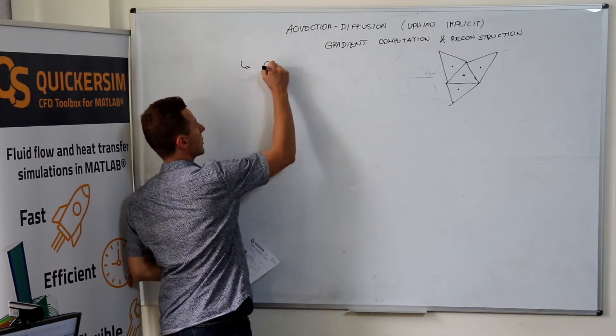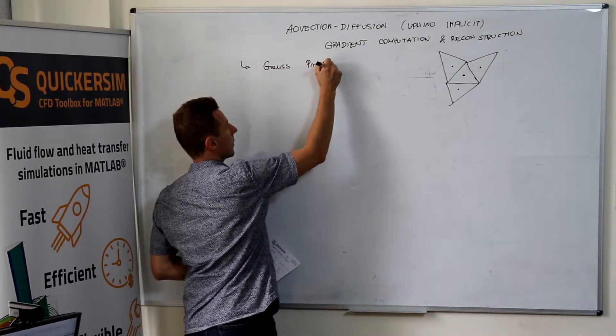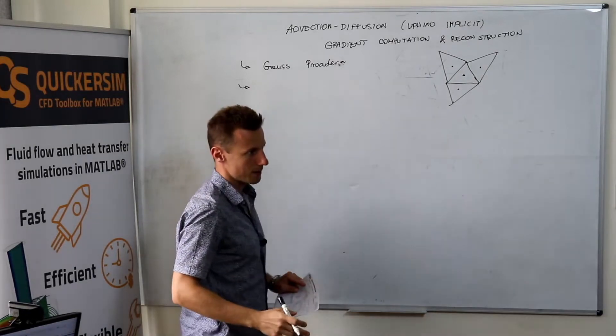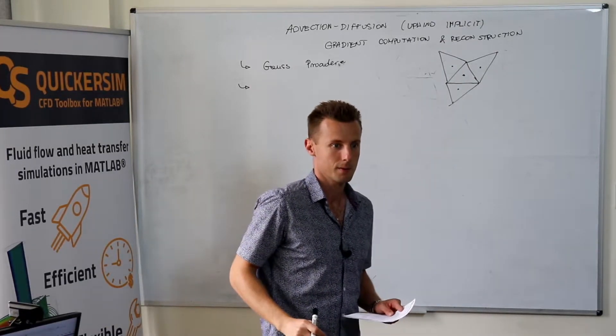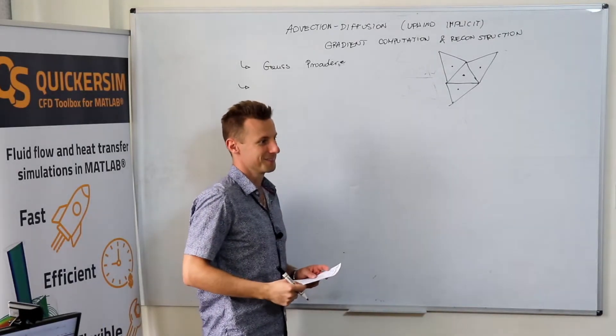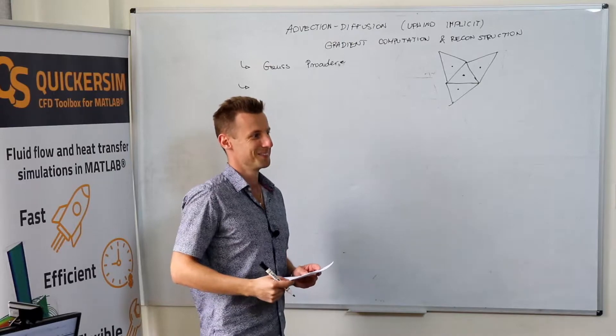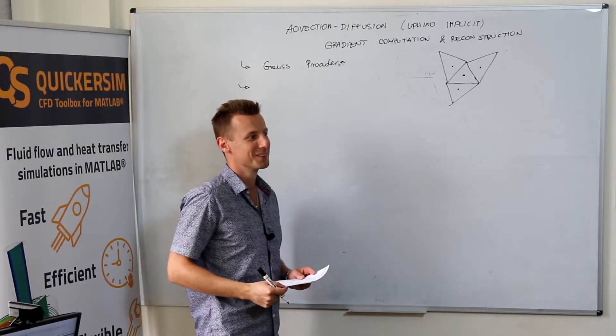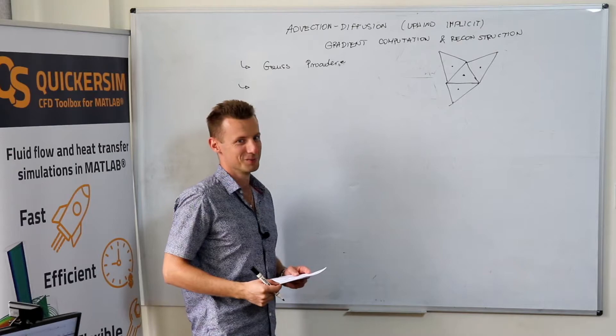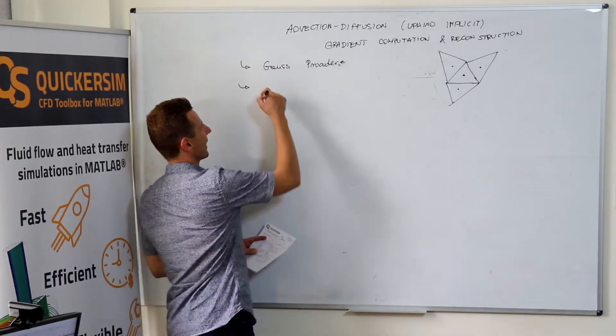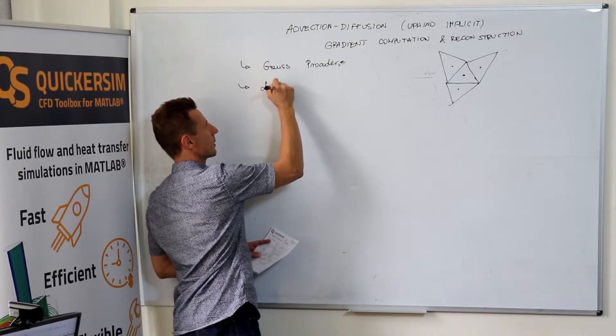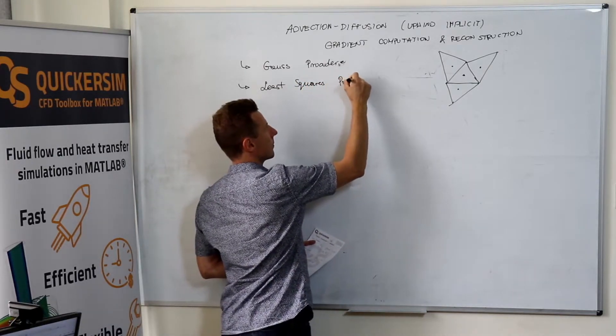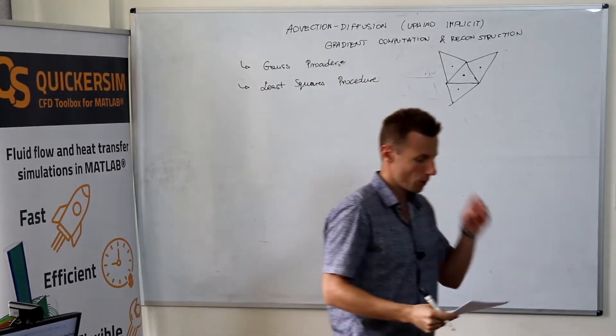And there are two ways in finite volumes, or probably more ways to do that, but two popular ways how people compute gradients. One of them is the Gauss procedure. The other one is, does anyone know? So, Gauss and not Gauss, then not Gauss is Least Squares formulation. What is each of them?